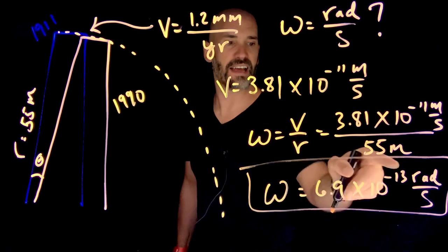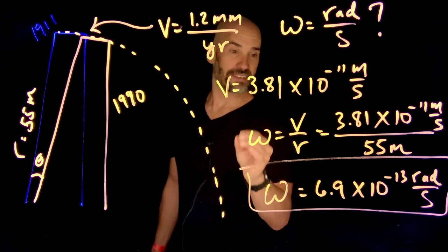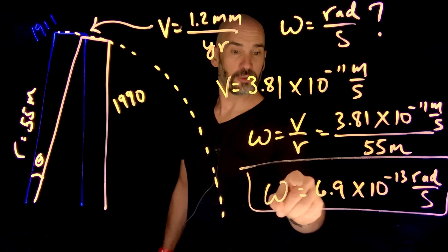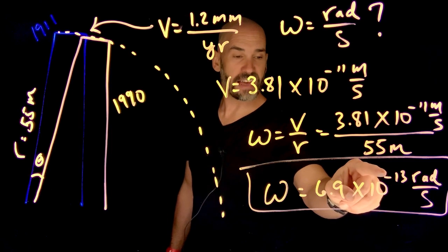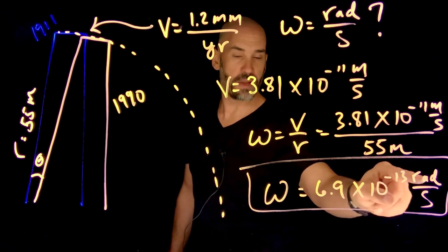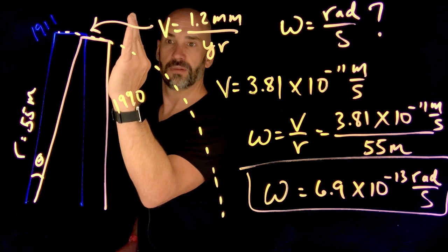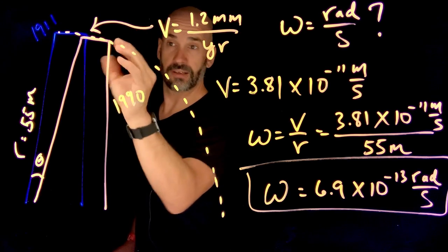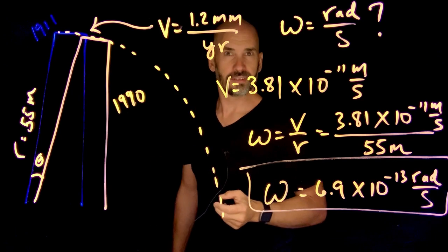So omega is going to be 6.9 times 10 to the minus 13 radians per second. Tiny, tiny amount. But nevertheless, this just goes to show you that every second, this tiny infinitesimal fraction of a radian is being moved as this thing begins to fall.